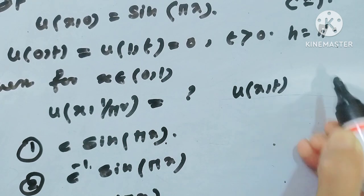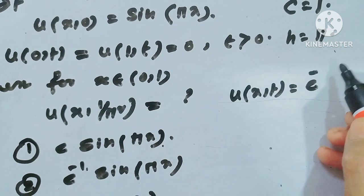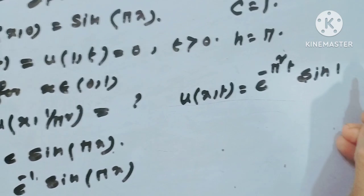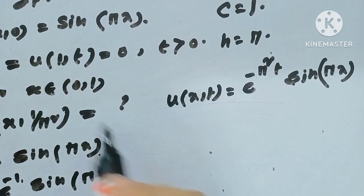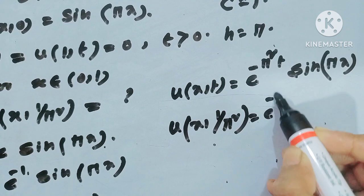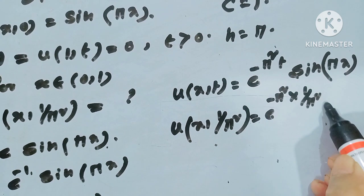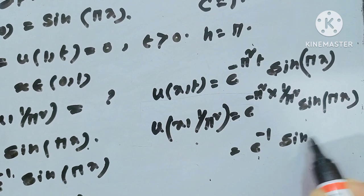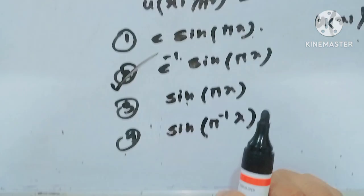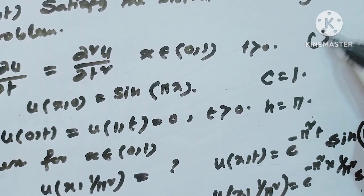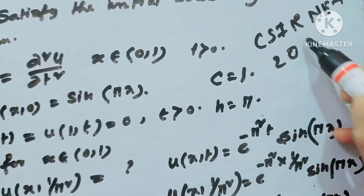Obviously u(x,t) = e^(−n²ct) * sin(nx), here n = π and c = 1, so u(x,t) = e^(−π²t) * sin(πx). We have to find u(x, 1/π²). This value would be e^(−π² * (1/π²)) * sin(πx) = e^(−1) * sin(πx). So option 2 is the correct answer. This question appeared in CSE NET 2016 exam.